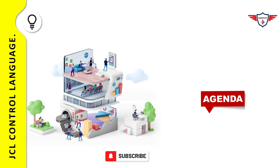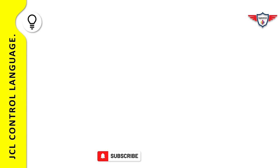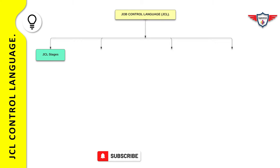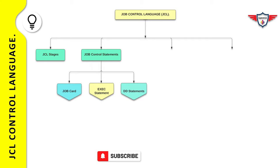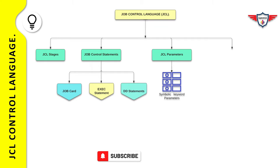We start today's session with an introduction to IBM mainframe. Then we will understand the term JCL and why it is important from a mainframe perspective. Then we will deep dive into different stages of JCL, followed by job control statements — including job card, execute statement, and DD statements. After that, we will look at different coding rules applicable when you write a JCL, and JCL parameters that include both positional and keyword parameters.